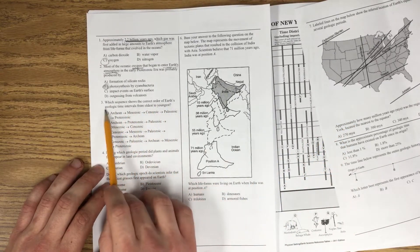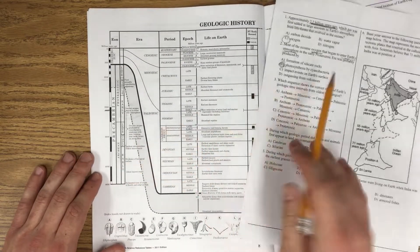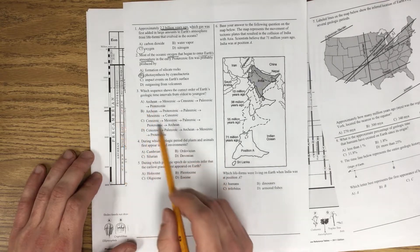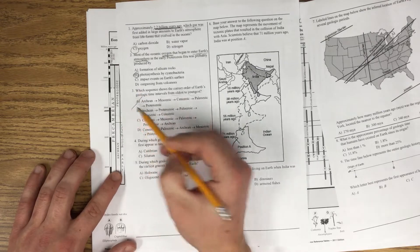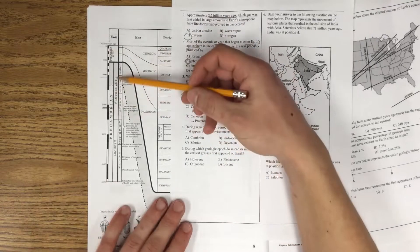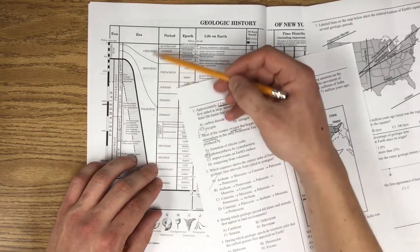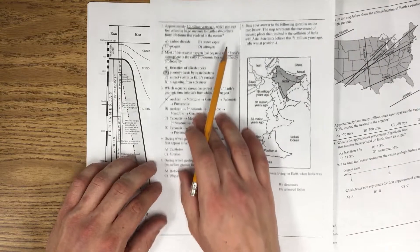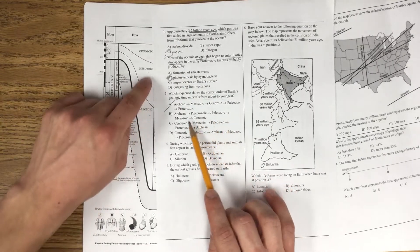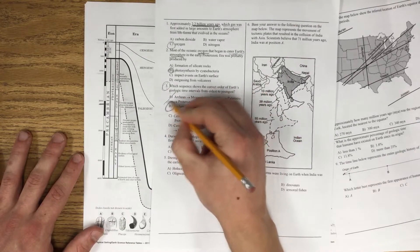So let's take a look at this. Which sequence shows the correct order of Earth's geologic time intervals from oldest to youngest? The oldest is down at the bottom. So that's going to be the Archean, Proterozoic. So Archean-Mesozoic? Wrong. Archean-Proterozoic? Possibly. So let's make sure that we're good after that. Proterozoic. And if you look at the Phanerozoic, the Phanerozoic is broken into the Paleozoic, Mesozoic, and Cenozoic. So Archean, Proterozoic, Paleozoic, Mesozoic, Cenozoic. That's the order it goes in for question three.